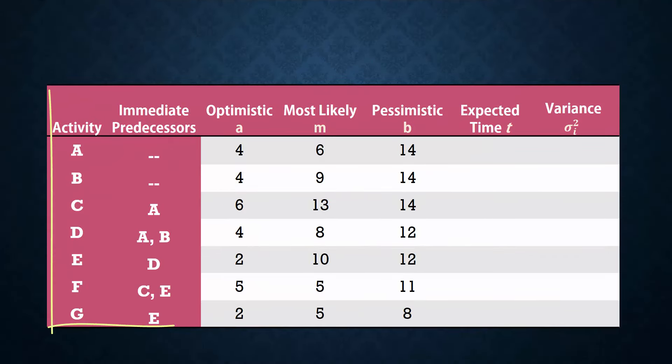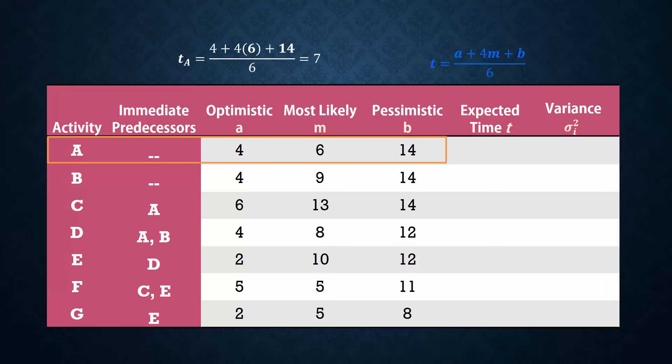Here we have a table showing activity predecessors and their uncertain time estimates. Optimistic, most likely and pessimistic times are represented by a, m and b respectively. To calculate the expected time t, we apply the formula t equals a plus 4m plus b over 6. So the expected time for a is calculated as 4 plus 4 times 6 plus 14 divided by 6, and that gives 7. We do the same for activity b, c, d, e, f, and g.